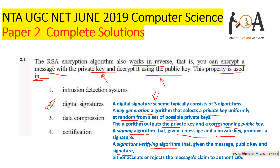The concept in the question is that the encryption algorithm works in reverse — you can encrypt a message with the private key and decrypt it using the public key. This property is used in digital signatures, which can accept or reject a message claim and verify its authenticity. Digital signatures are used in software distribution and financial transactions to claim authenticity of transfers. So option two is the most suitable answer.